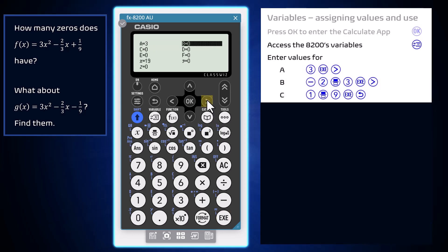Arrow right and assign negative 2 over 3 to B using the Fraction key and finishing with OK or Execute. Arrow right once more and assign 1 ninth to C in a similar fashion.